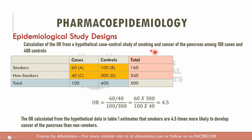In an example case control study of smoking and cancer of the pancreas among 100 cases and 400 controls, with the risk factor being smokers versus non-smokers, plugging the data into the odds ratio formula yields an OR of 4.5. Since 4.5 is greater than one, this means that smokers are 4.5 times more likely to develop cancer of the pancreas than non-smokers.